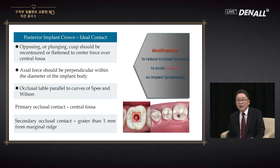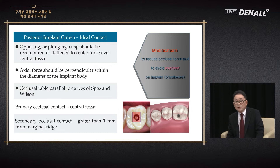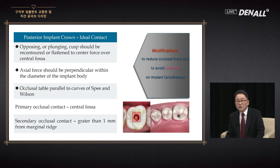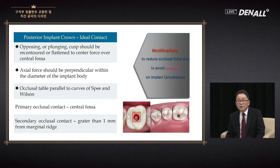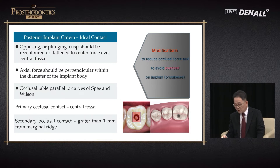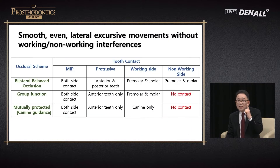For the posterior implant crown, the ideal contact — the primary occlusal contact should be on the central fossa. Secondary occlusal contact should not be greater than 1 mm from the central fossa. As it is recommended, this is not easy. The marginal ridge and the functional cusp — the maxillary functional cusp — should be ground a little bit. Regarding cantilever, it is also discussed.